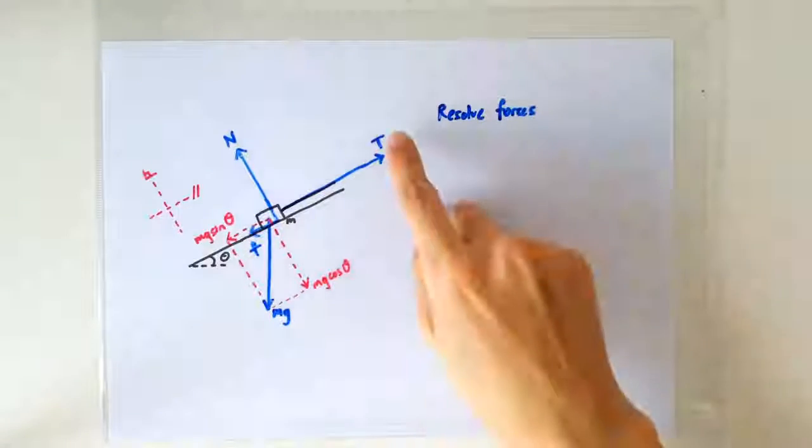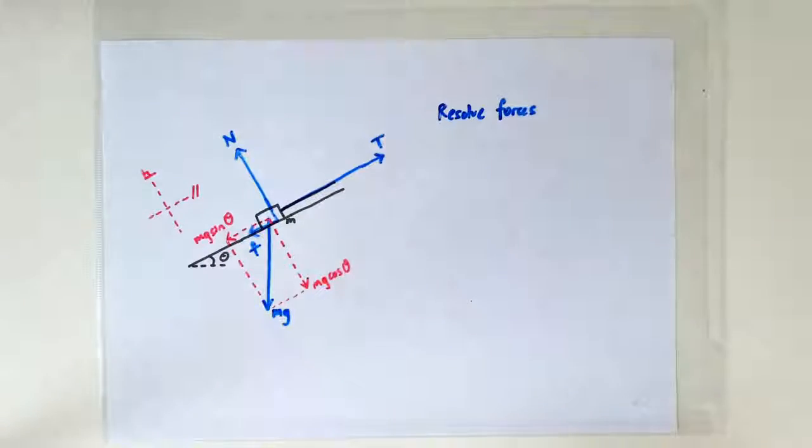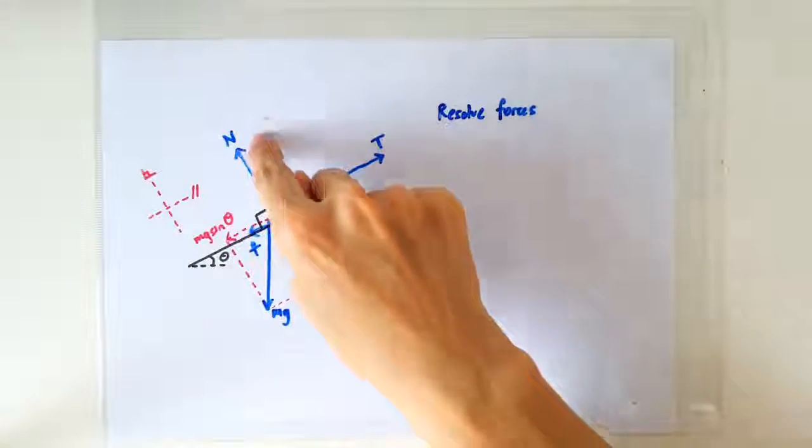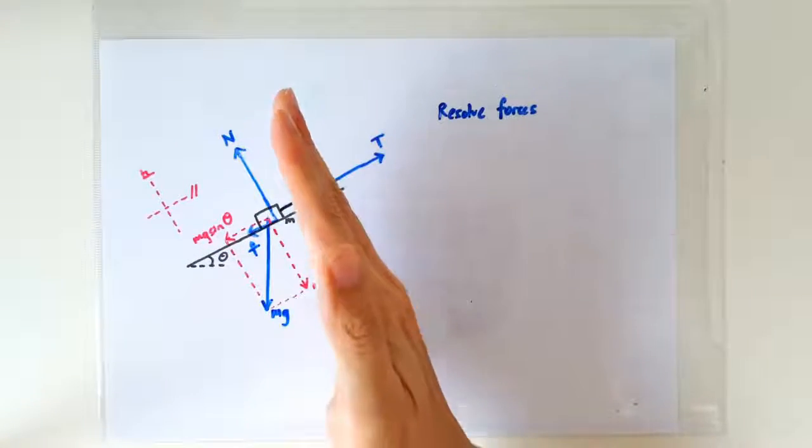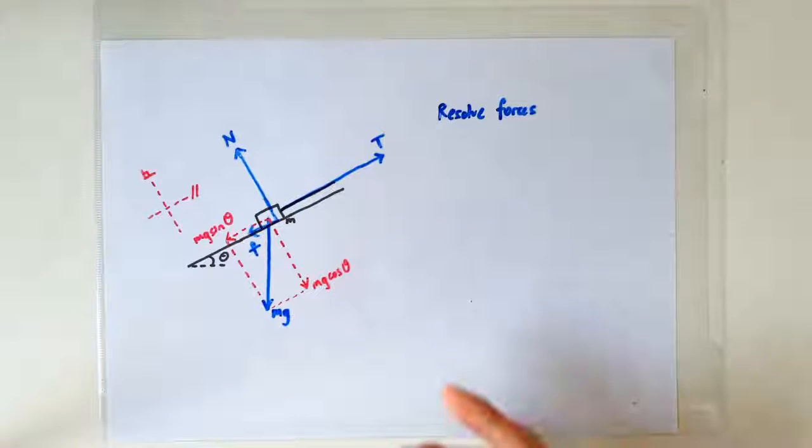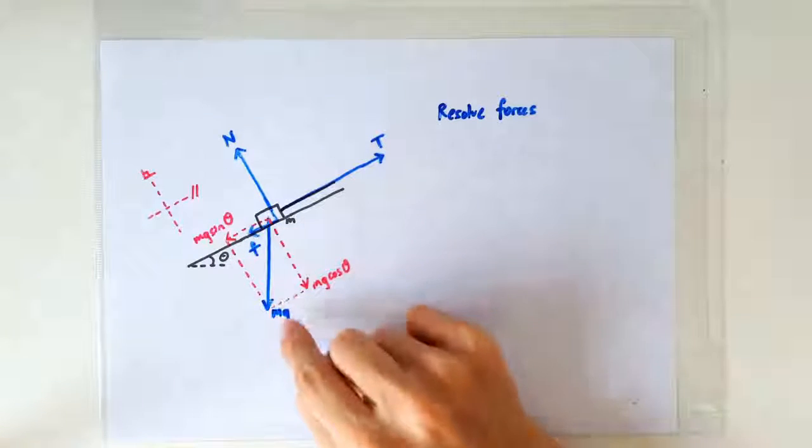In fact, tension and friction are already in the direction along the slope, and normal contact force is already in the direction perpendicular to the slope. So the only force that we have to resolve is actually just mg.